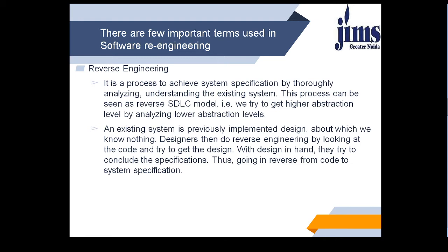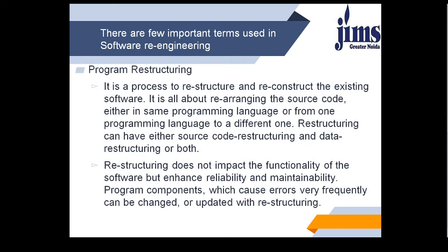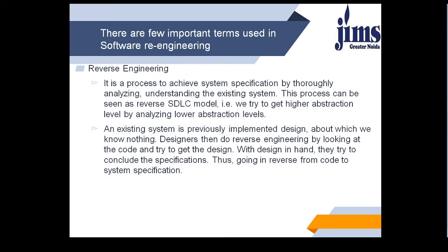This process can be seen as a reverse of the HGHC model. We try to get a higher abstraction level by analyzing a lower abstraction level. An existing system is a previously implemented design about which we know nothing. Designers then do the reverse engineering by looking into the code and try to get the design. With design in hand, they then try to conclude the specification, thus going in reverse from code to system specification.